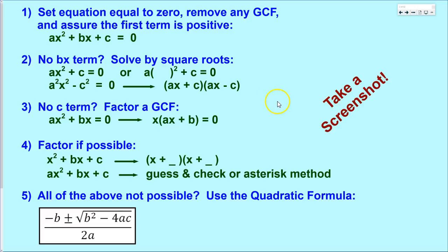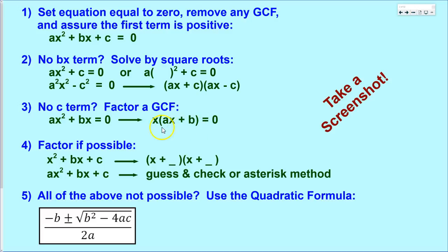The next step in the flowchart is whether or not you have a c value. If the constant term — the term with no variable — is missing, then both terms have a variable in them. So you can factor that variable out and apply the zero product property from there.